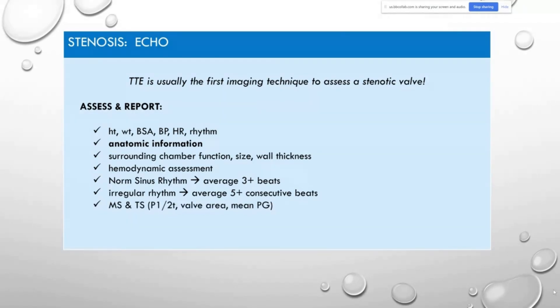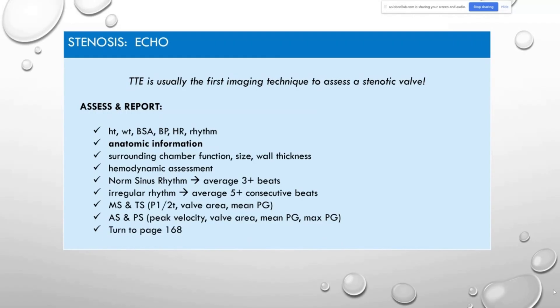For mitral stenosis and tricuspid stenosis we measure pressure half-time, valve area, and mean pressure gradient. For aortic stenosis and pulmonic stenosis we obtain peak velocity, valve area, mean pressure gradient, and maximum pressure gradient. Page 168 covers this well.